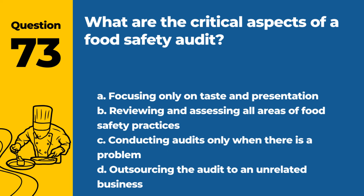Question 73. What are the critical aspects of a food safety audit? a. Focusing only on taste and presentation. b. Reviewing and assessing all areas of food safety practices. c. Conducting audits only when there is a problem. d. Outsourcing the audit to an unrelated business. Answer: b. Reviewing and assessing all areas of food safety practices. A comprehensive audit is essential for ensuring food safety standards are met.